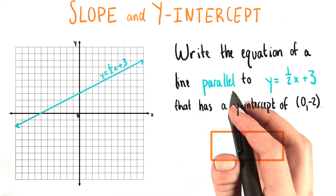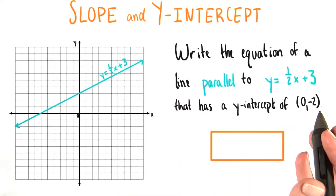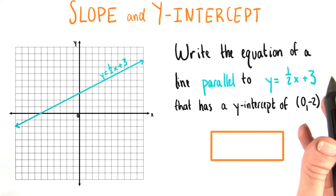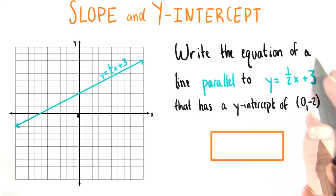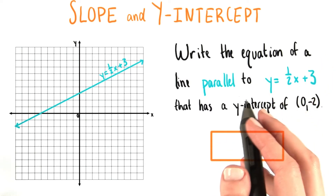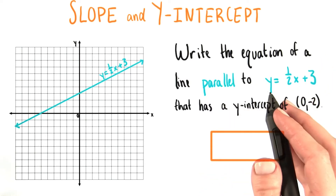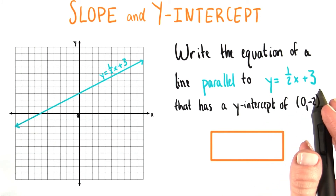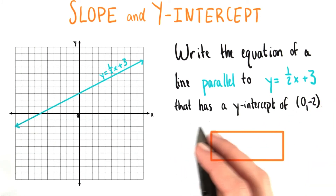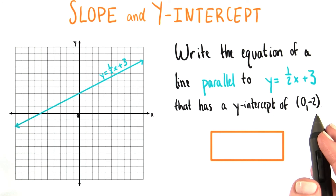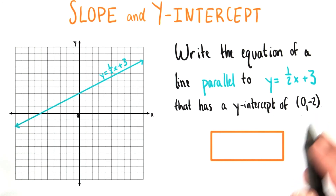Considering what parallel means, and your understanding of how to form equations of different lines, can you tell me then what the equation of a line parallel to the line y equals 1 half x plus 3, but that has a different y-intercept, would be.